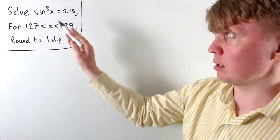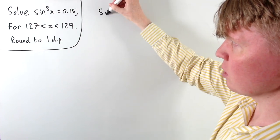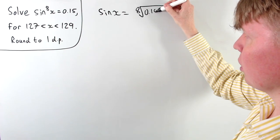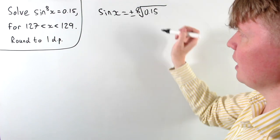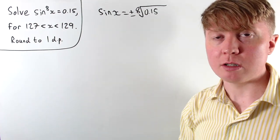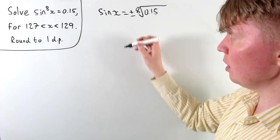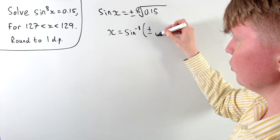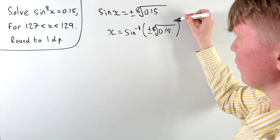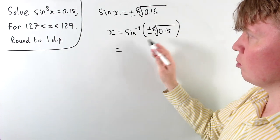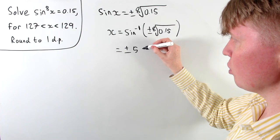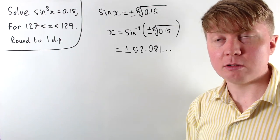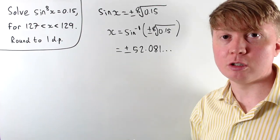If we start by working in degrees, to solve this equation we can take eighth roots on both sides, effectively to say that sin x is going to be the eighth root of 0.15. The positive and negative roots would both work as our two real solutions. To find x we can use the inverse sine function, so x is inverse sine of the positive or negative eighth root of 0.15. Putting this into a calculator, we get plus or minus 52.081, but we need our solution x to be in the range between 127 and 129.